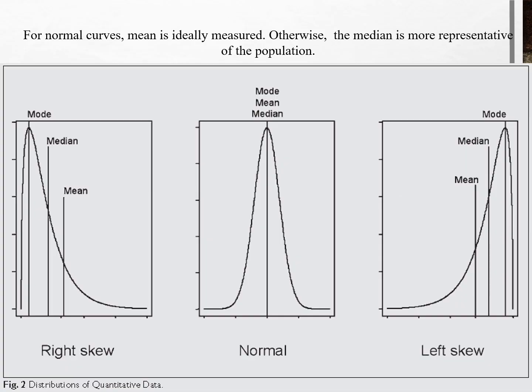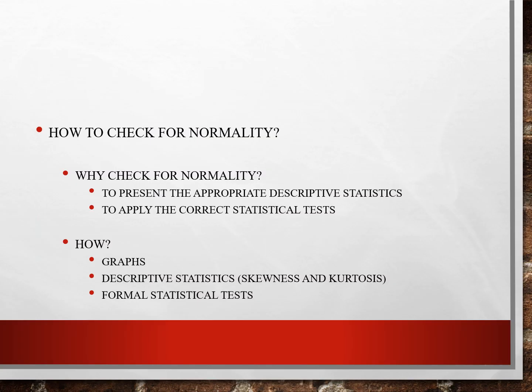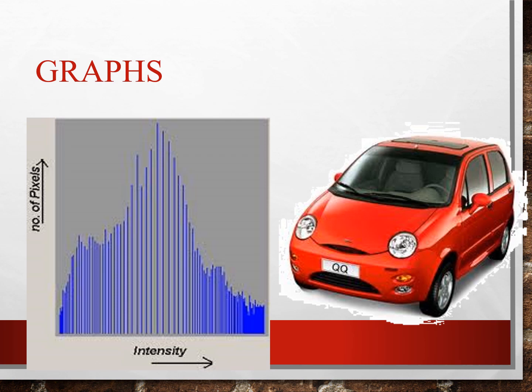Remember, for normal curves, it could be either right skewed or left skewed. How to check for normality? Why do we have to check for normality? To present the appropriate descriptive statistics and to apply the correct statistical tests. This could be shown by graphs, descriptive statistics, skewness — the sideways deviation — and kurtosis, which is the peakness caused by an infrequent extreme deviation, and the use of formal statistical tests.